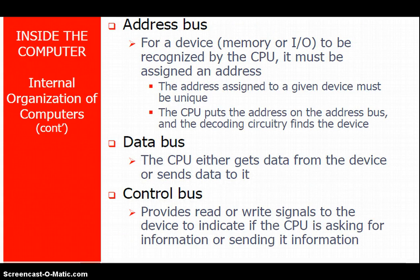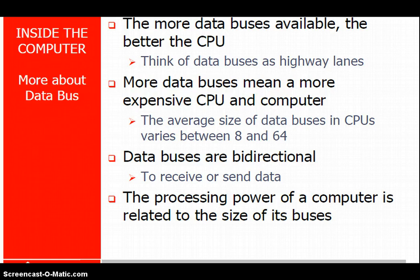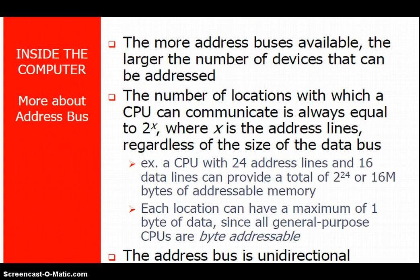The address bus is a unidirectional type — it only assigns addresses in one direction. The data bus is bidirectional, meaning it can both send and receive data. The control bus controls the CPU, managing how information is sent or received. More data buses mean a more expensive CPU and computer. The data bus size varies from 8 to 64 bits, and the processing power of a computer is related to the size of its buses.